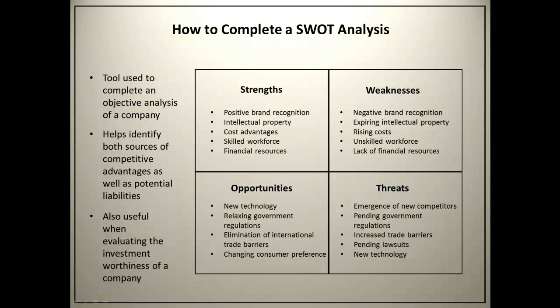There are four different quadrants or four different areas that businesses have to complete an analysis in, which means they have to do a little bit of research and find out what they're good at and not so good at. The SWOT analysis is broken up into categories that are considered to be internal and categories that are considered to be external. Something that is internal is something that the firm or the company has control over — they typically have some effect on what goes on in the internal environment.